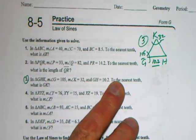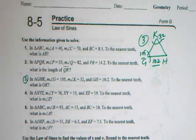If we do 105 plus 32, we get 137. If we subtract that from 180, we get 43.